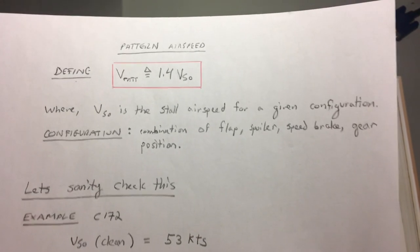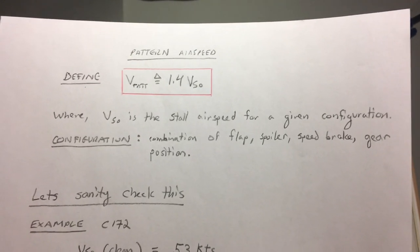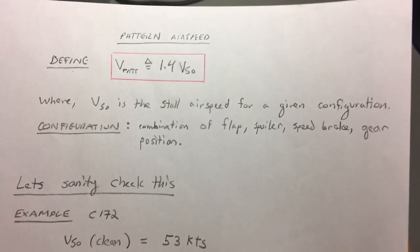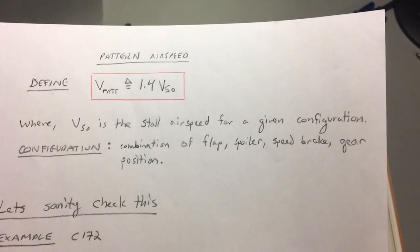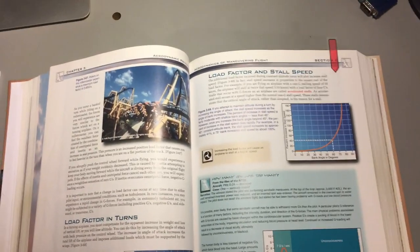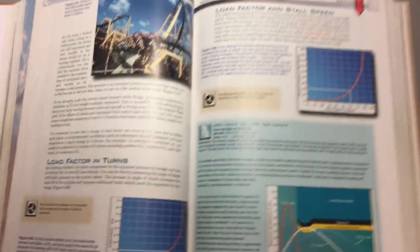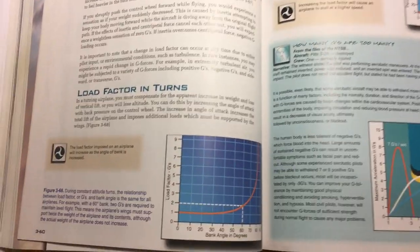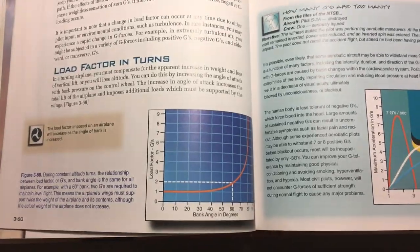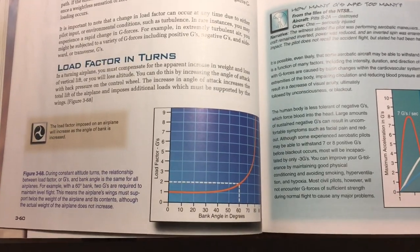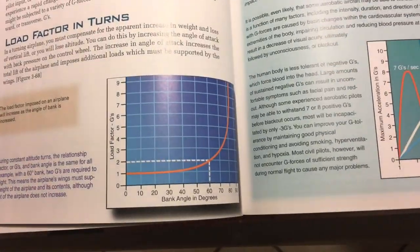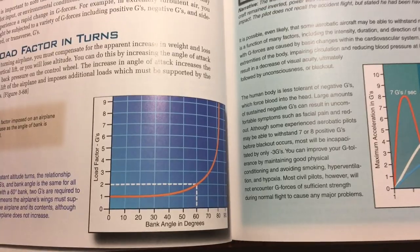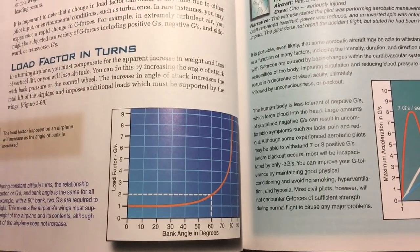Now let's see where the motivation for defining the pattern airspeed as 1.4 times V-stall came from. We can do that if we refer to the trusty load factor diagrams taken out of the Jeppesen training book. Here we can see that at 60 degree bank angle the load factor goes by 2.